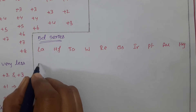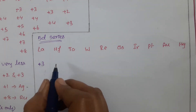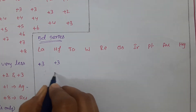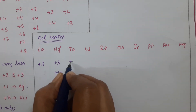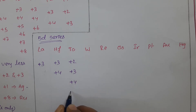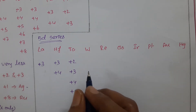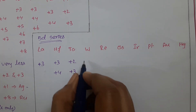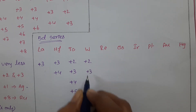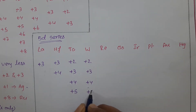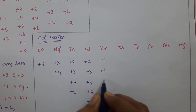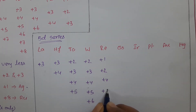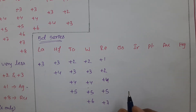Lanthanum can show only plus 3 oxidation state. Hafnium can show plus 3 and plus 4 oxidation states. Tantalum can show plus 2, plus 3, plus 4, and plus 5 oxidation states. Tungsten can show plus 2, plus 3, plus 4, plus 5, and also plus 6 oxidation states. Rhenium can show plus 1, plus 2, plus 4, plus 5, and also plus 7 oxidation states.